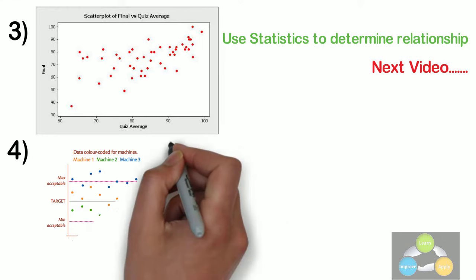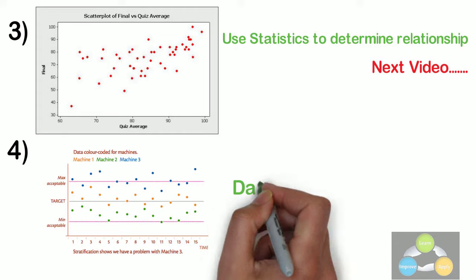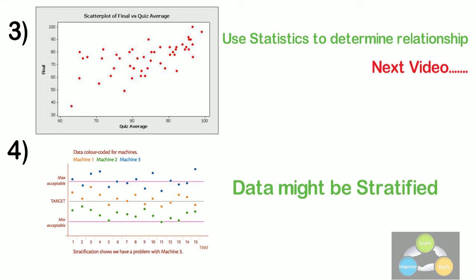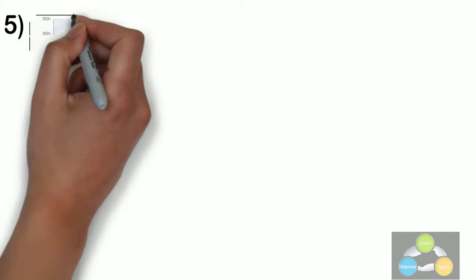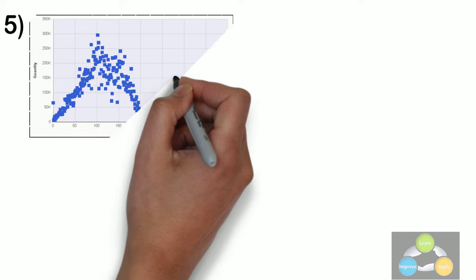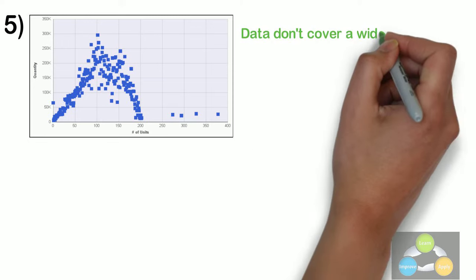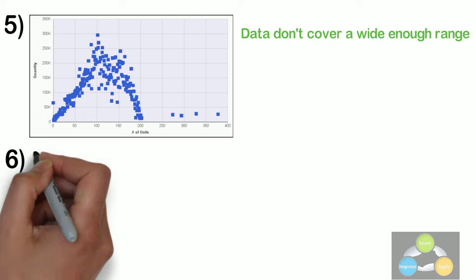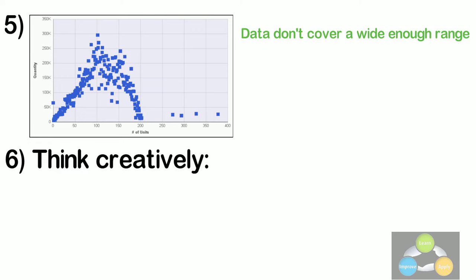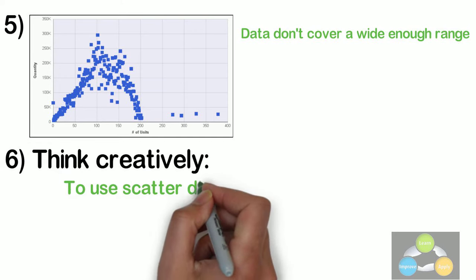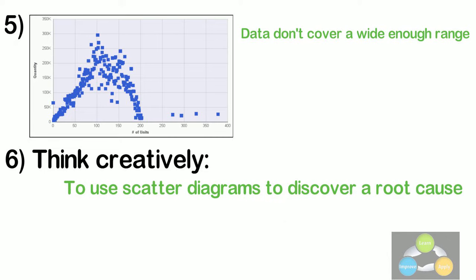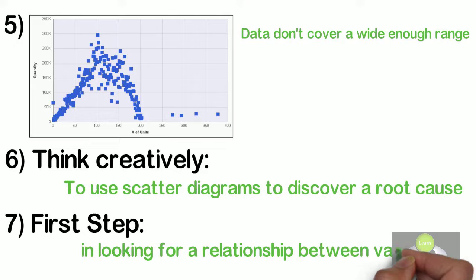If the scatter diagram shows no relationship between the variables, consider whether the data might be stratified. If the diagram shows no relationship, consider whether the independent variable has been varied widely. Sometimes, a relationship is not apparent because the data don't cover a wide enough range. Think creatively about how to use a scatter diagram to discover a root cause. Drawing a scatter diagram is a first step in looking for a relationship between the variables.